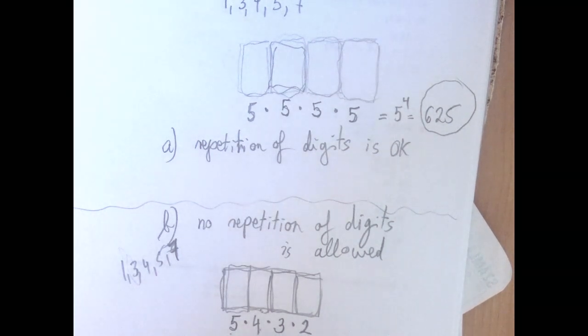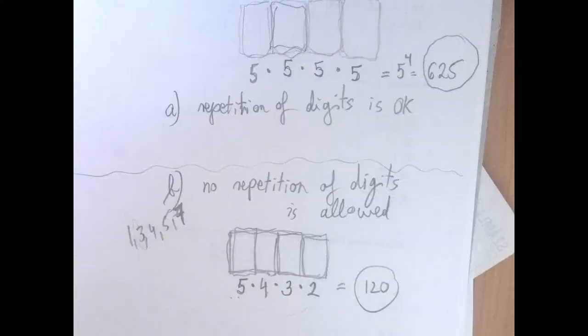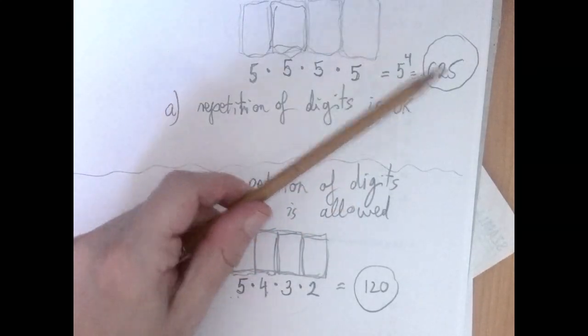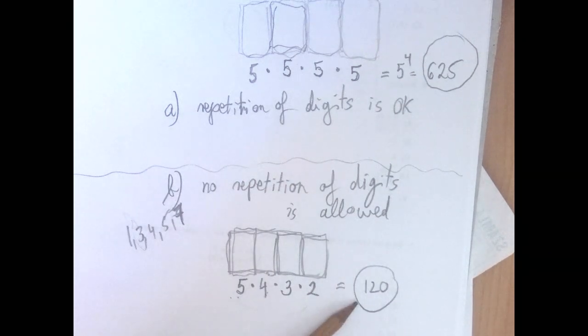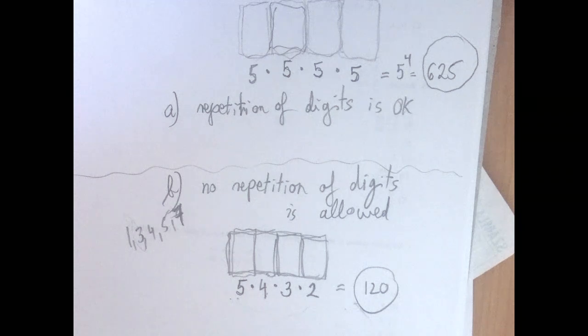I would match them five times two, that's ten, so it's 120. So 625 many four-digit numbers, among which 120 with all digits different. Thank you for watching.